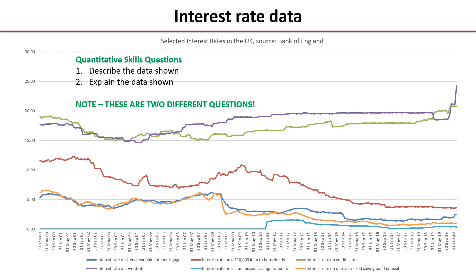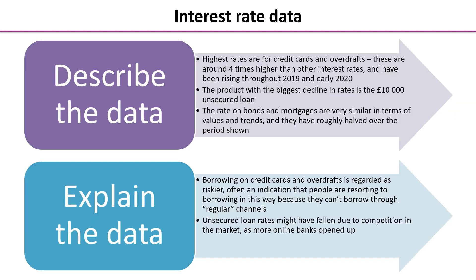Quantitative skills question: first, describe the data, and second, explain the data. These are two very different questions. Describing the data is as if you were telling somebody about this graph who can't see it — like being a radio economics journalist. You look for the highest rates, the lowest rates, trends overall, and some perspective.